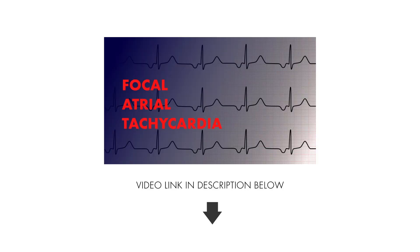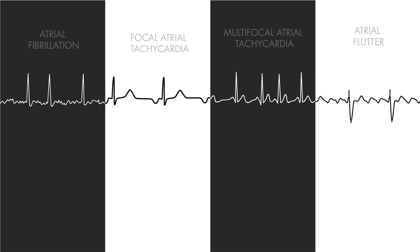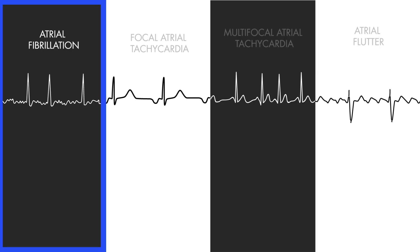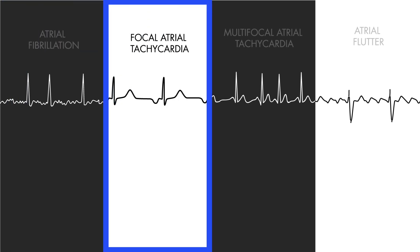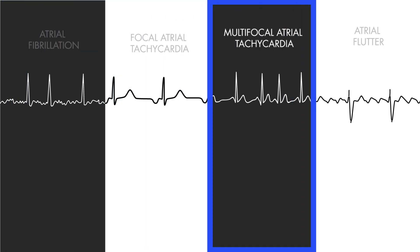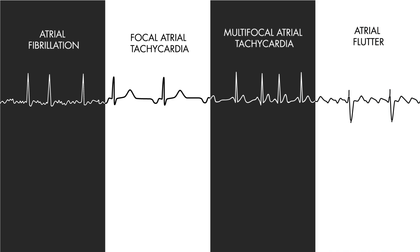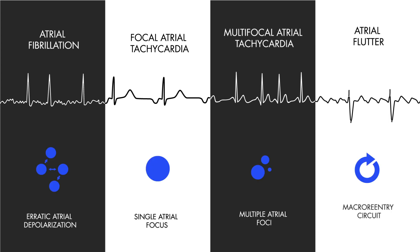There are four general types of atrial tachyarrhythmias, specifically those that arise from sites that are not sinus. The four general types are atrial fibrillation, focal atrial tachycardia, multifocal atrial tachycardia, and atrial flutter. These are the ones I often reference when teaching medical interns or students, since their electrical etiologies within the atria reflect common patterns resulting in their arrhythmias.